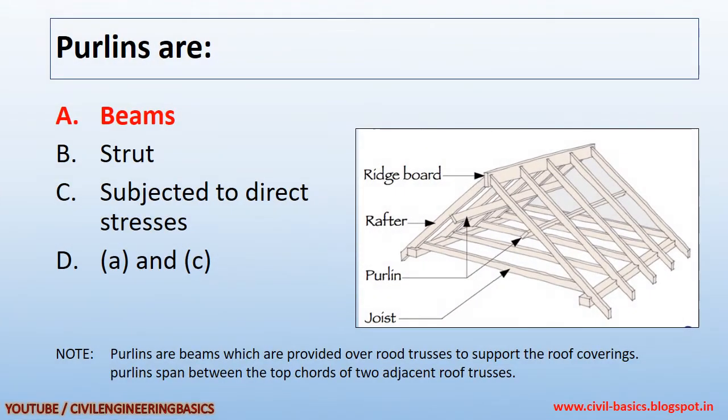Purlins are beams which are provided over roof trusses to support the roof coverings. Purlins span between the top chords of two adjacent roof trusses.